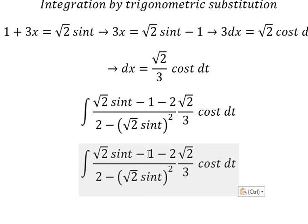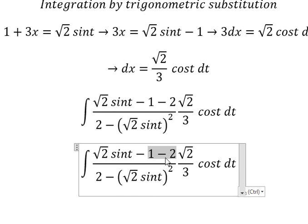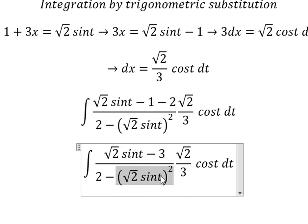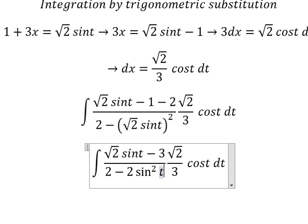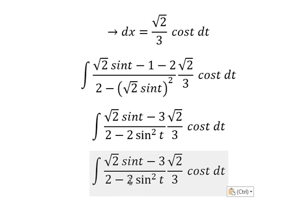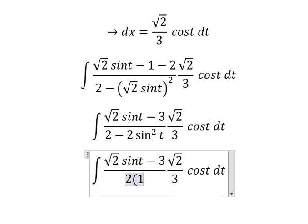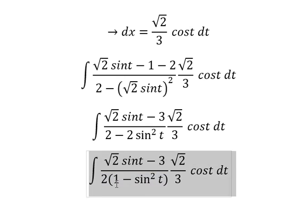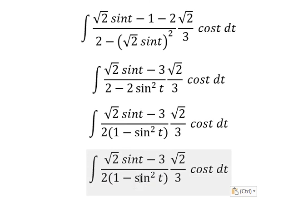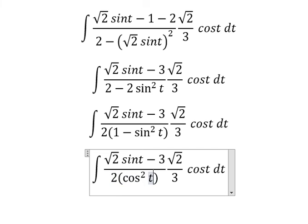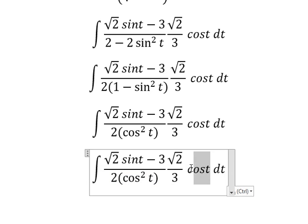Now we need to simplify. We have negative number three, and we have 2 sin²(t). We can do factorization with number two. One minus sin²(t) we change to cos²(t), and then cos(t) times cos(t) we simplify.